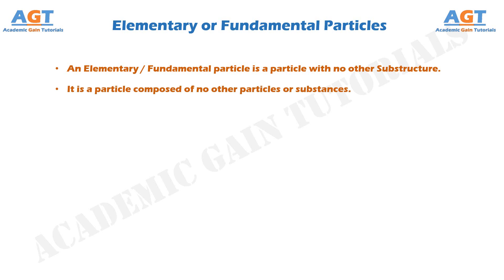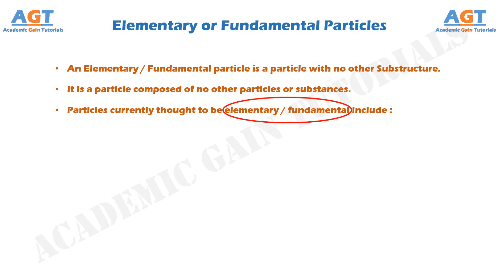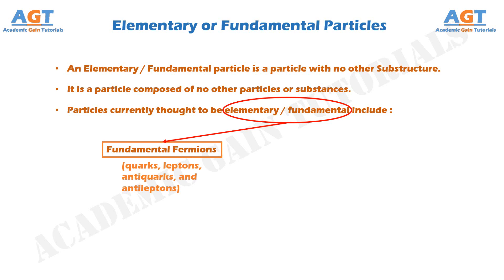At present, the particles that are thought to be elementary or fundamental particles include the fundamental fermions, which are the quarks, leptons, and their antiparticles — that is, the antiquarks and antileptons — which are generally called matter particles and antimatter particles.